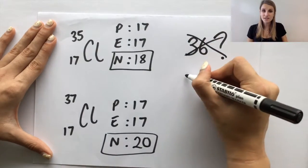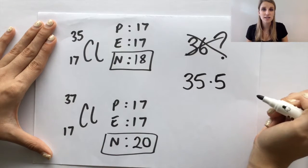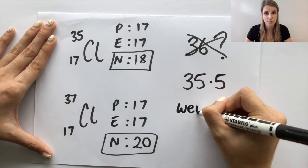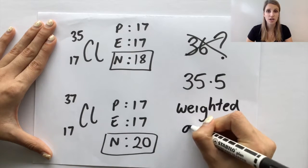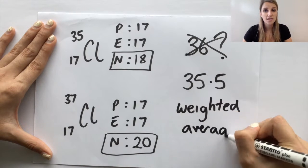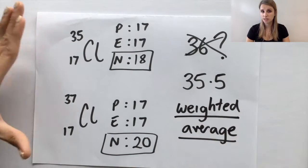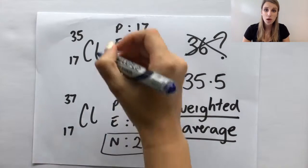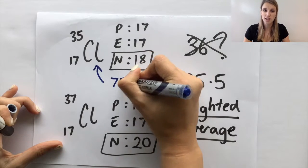Now, the reason for that is that actually it's not just an average, it's a weighted average. The weighted average is based on how common something is. So the reason that it's closer to 35 than it is to 37 is that the 35 isotope is more common or more abundant. In fact, 35 is 75% common, whereas the chlorine-37 is only 25% common.